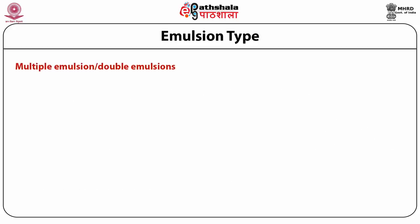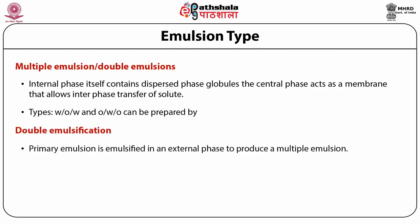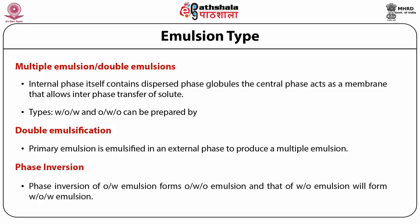In multiple or double emulsions, the internal phase itself contains dispersed phase globules. The central phase acts as a membrane that allows interphase transfer of solutes. Types include water-in-oil-in-water and oil-in-water-in-oil. These can be prepared either by double emulsification, where a primary emulsion is emulsified in an external phase, or through phase inversion: phase inversion of an oil-in-water emulsion forms an oil-in-water-in-oil emulsion, and phase inversion of a water-in-oil emulsion generates a water-in-oil-in-water type.